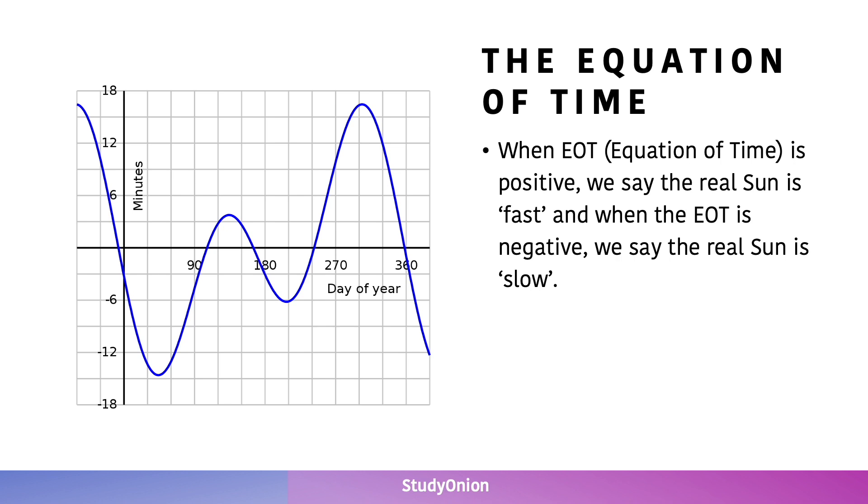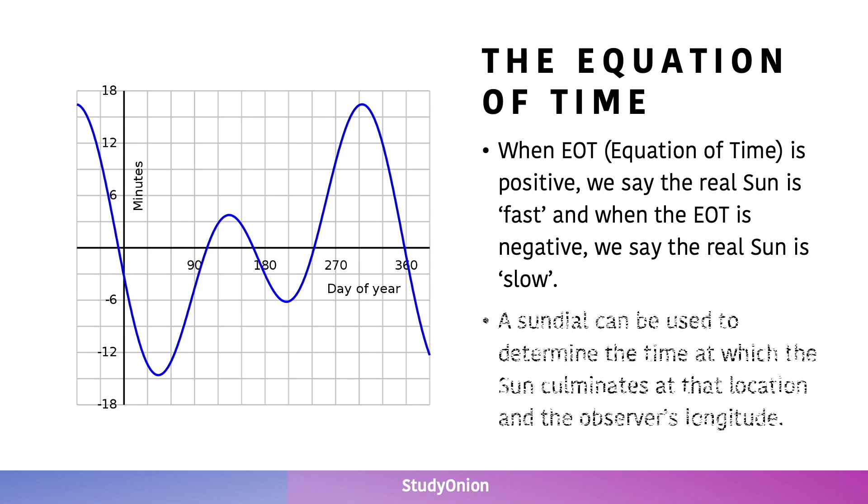A sundial can be used to determine the time at which the sun culminates at that location and at an observer's longitude. The formula for equation of time is that apparent solar time (AST), which is what is displayed on a sundial, minus mean solar time (MST), which is what's on our watches and clocks.